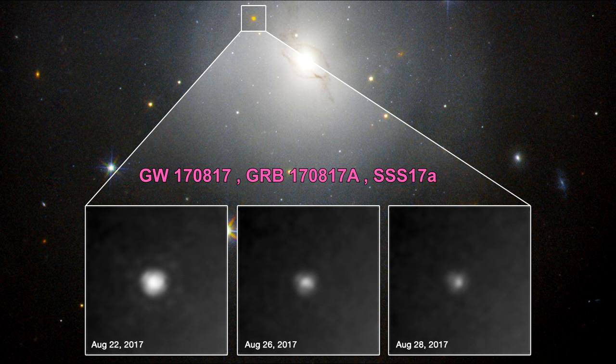This all represents powerful evidence that GW170817, GRB 170817A and SSS-17A are indeed caused by the same event, the merger of two neutron stars.